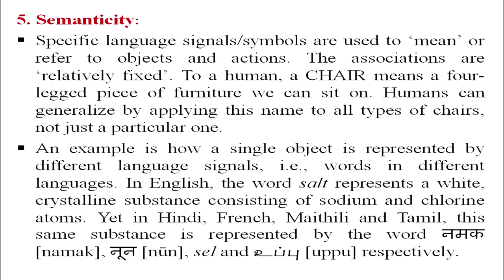The next feature is semanticity. Every human language uses words and symbols to denote objects and actions, and these associations are relatively fixed in meaning. To a human, 'chair' means a four-legged piece of furniture to sit on, and humans can generalize this name to all types of chairs. For example, the word 'salt' in English represents a white crystalline substance of sodium and chlorine; in Hindi it is 'namak,' in French 'sel,' in Maithili 'noon,' in Tamil 'upu.'